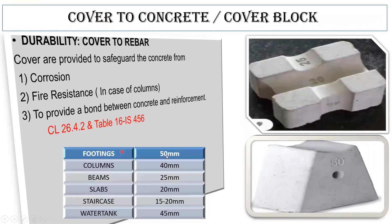If you're using a footing, the clear cover has to be 50 mm. For a column, it has to be 40 mm. For a beam, it has to be 25 mm. For a slab, it has to be 20 mm. For a staircase, you have to give a clear cover of 15 to 25 mm. And if you're constructing a water tank, you have to give 45 mm as the clear cover. These are the cover blocks — you can see 50 mm blocks, 20 mm blocks, 25 mm blocks, 30 mm blocks. The cover block is placed at the site and the reinforcement is placed over it.